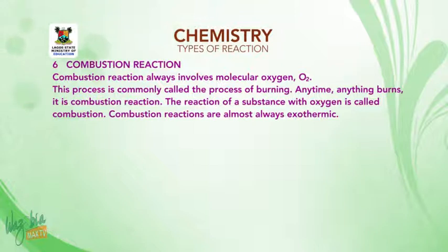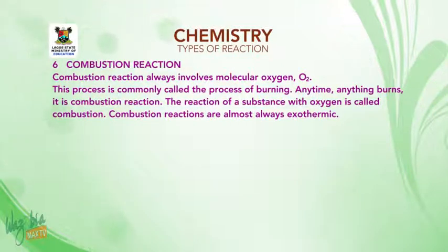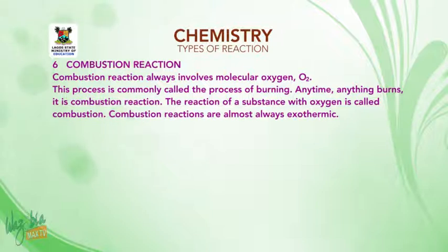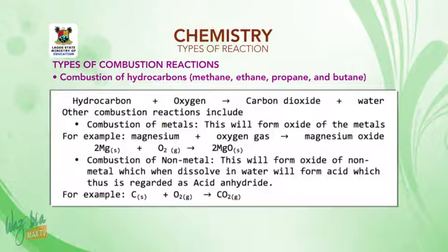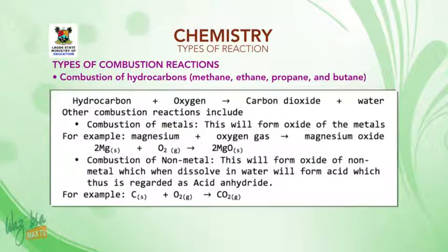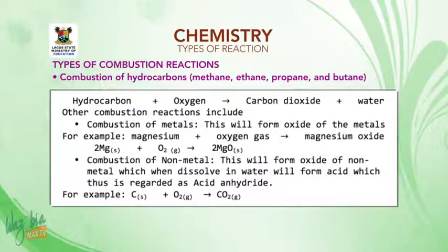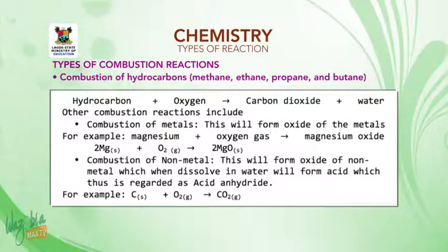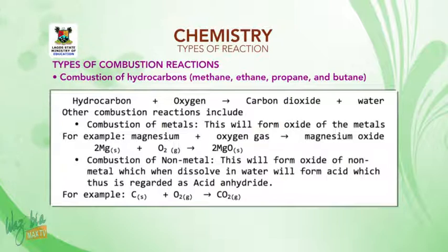Combustion reaction. Combustion always involves molecular oxygen — this process is commonly called burning. Anytime anything burns, it is a combustion reaction. The reaction of a substance with oxygen is called combustion, and combustion reactions are always exothermic. Types: combustion of hydrocarbons such as methane, ethane, propane, and butane — hydrocarbon + oxygen → carbon dioxide + water. Combustion of metals forms oxides; for example, magnesium + oxygen → magnesium oxide. Combustion of non-metals forms oxides which, when dissolved in water, form acids. For example, carbon burns in oxygen to give carbon dioxide.